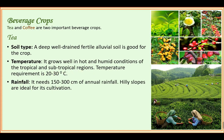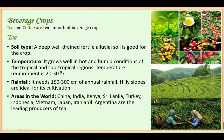Tea needs about 150 to 300 centimeters of annual rainfall. Hilly slopes are ideal for its cultivation because the roots of tea plants cannot survive in stagnant water — if waterlogging occurs, the tea plant cannot survive. That is why such slopes are used, ensuring good rainfall supply without waterlogging.